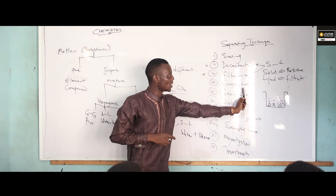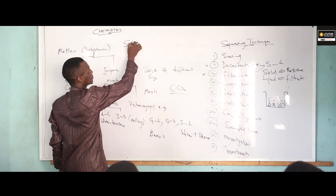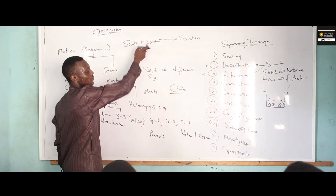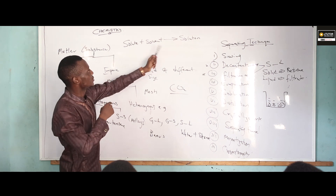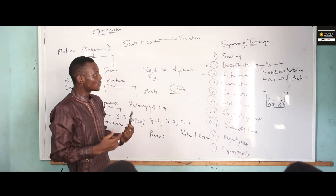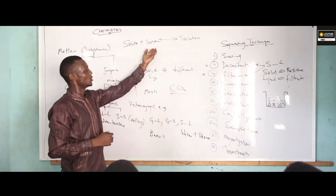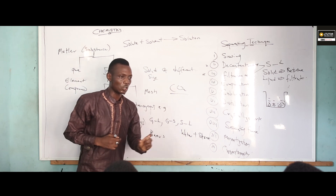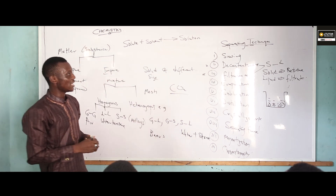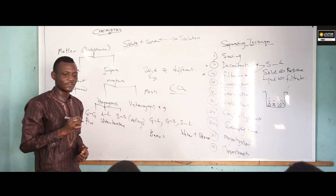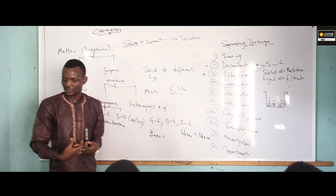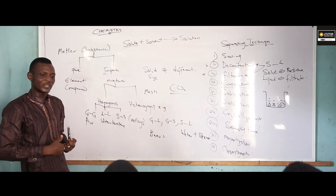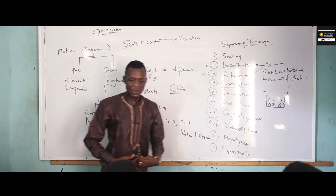In evaporation, when we are having a solute plus a solvent, it forms a solution. Now we want to recover the solute from the solvent. If we want to use evaporation, the solute must be one that has a high melting point — that means the solid substance must be able to withstand heat. We popularly call this evaporation to dryness.